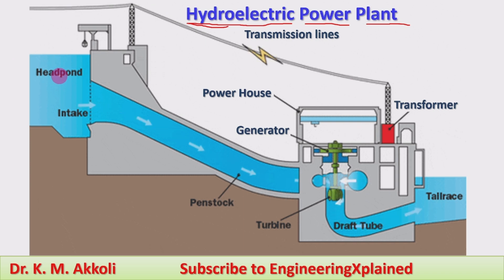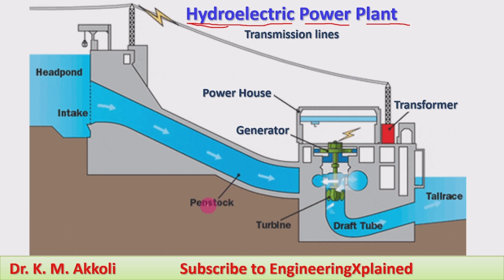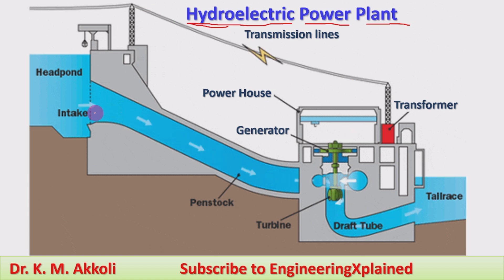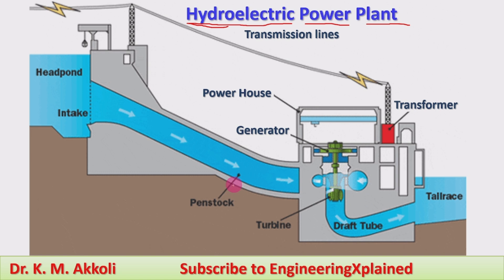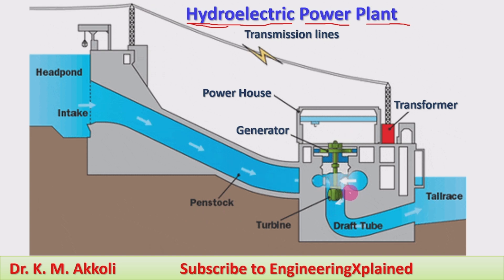The water is then allowed to flow through a pipe called the penstock. The penstock is the pipe or flow line connecting the reservoir to the turbine-generator, carrying the water from the reservoir.